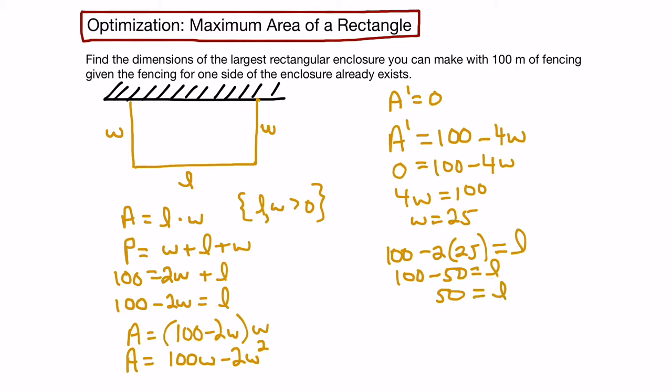What we're seeing is we'll get a maximum area when our width is 25 meters and our length is 50 meters. That maximum area will be, if we substitute it back into our original area function, 50 meters for length times 25 for the width, which equals 1250 meters squared.